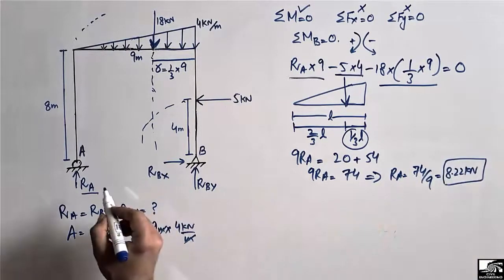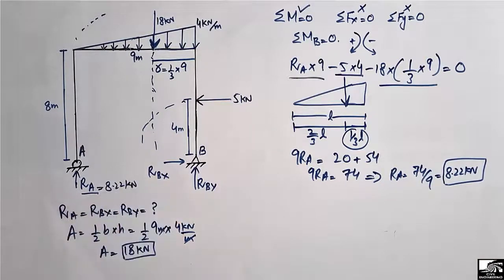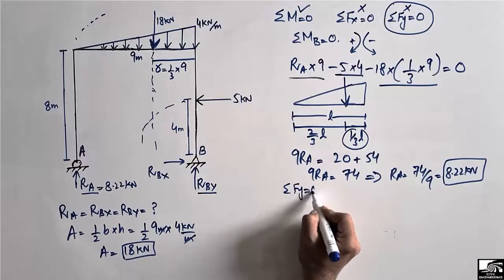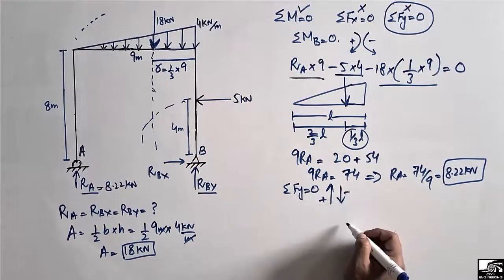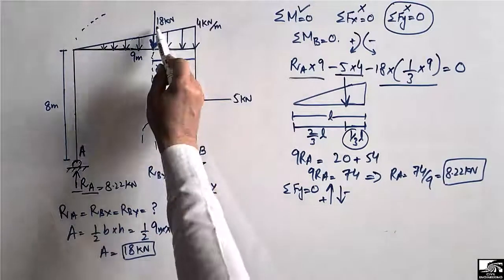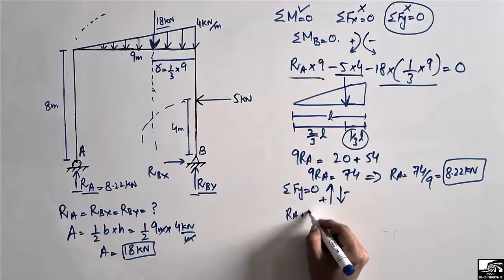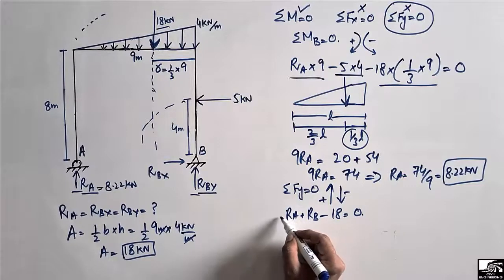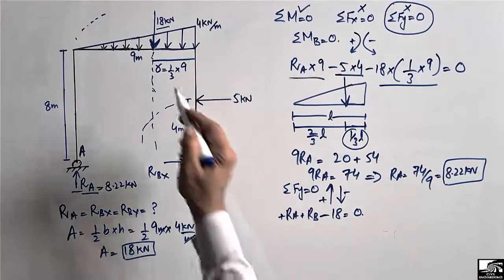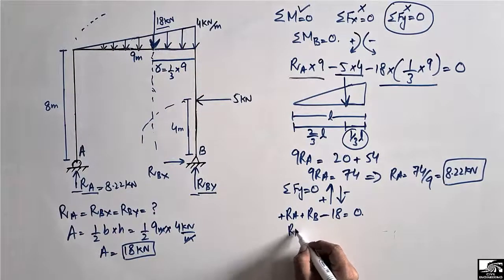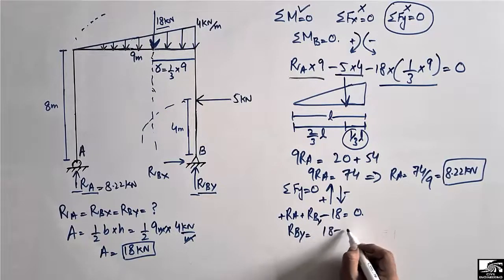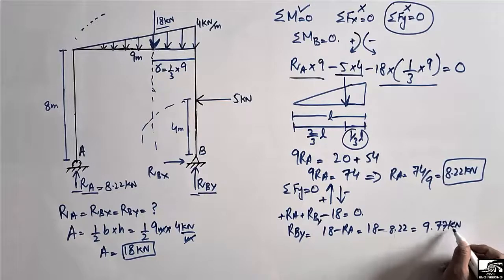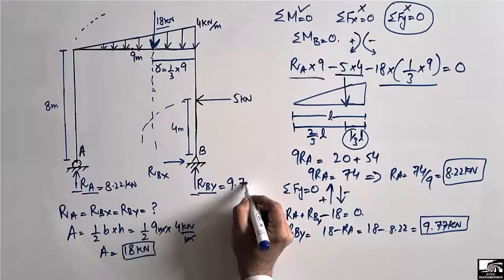Ra, the support reaction at A, is 8.22 kilonewtons. To find Rby, we use the equilibrium equation: summation of all vertical forces equals zero. Upward forces are taken as positive and downward forces as negative. Ra plus Rby minus 18 equals zero. Therefore Rby equals 18 minus Ra, which equals 18 minus 8.22, giving Rby equals 9.77 kilonewtons.